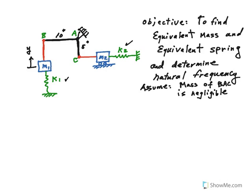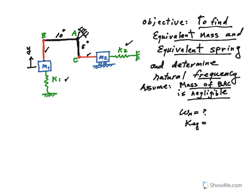What we have here is a bar BAC, like a bracket, which has a negligible mass, and then we have mass 1 connected with these rods, this rod in red, and then also mass 2 is connected to the point C with another rod. Our objective here is to find the equivalent mass and equivalent spring and eventually determine the natural frequency of the system, omega n. So we want to find equivalent spring, equivalent mass, and the natural frequency.